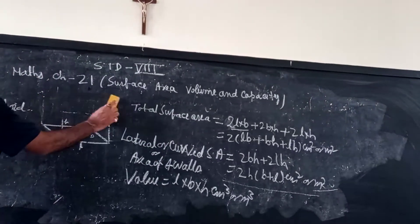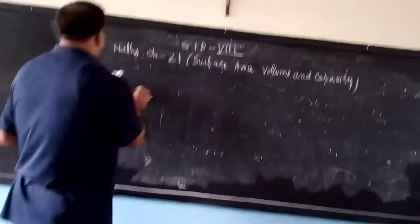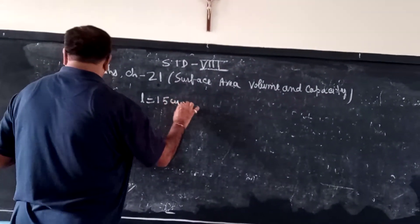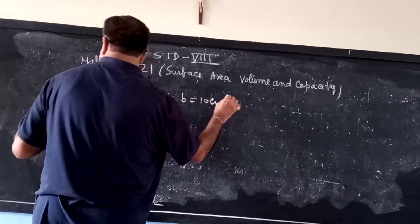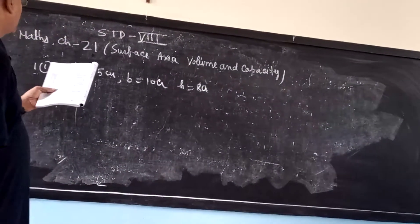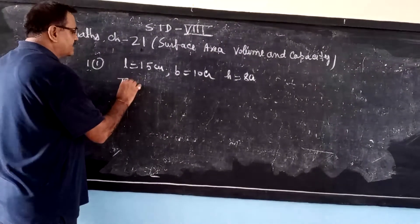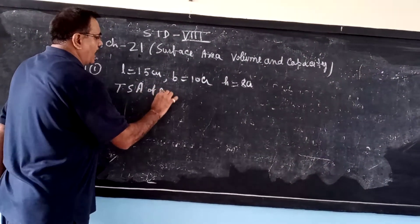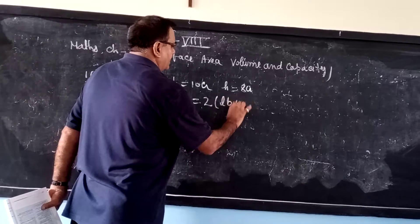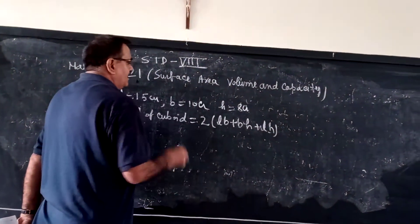One more figure here. Length given is 15 centimeters, breadth given is 10 centimeters, height given is 8 centimeters. We have to find the total surface area of the cuboid, volume, and total surface area. Total surface area of cuboid is equal to twice of (length into breadth plus breadth into height plus length into height). This is the formula.